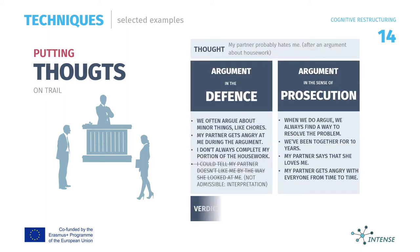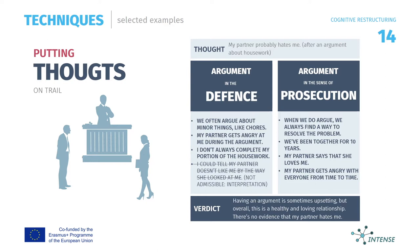First, your client will act as a defense attorney by defending their negative thought. Ask them to make an argument for why the thought is true, remembering to stick to verifiable facts — interpretations, guesses, and opinions are not allowed. Next, your client acts as the prosecutor, presenting evidence against the negative thought, again sticking to facts while excluding opinions. Finally, your client acts as the judge, reviewing the evidence and delivering a verdict in the form of a rational thought.